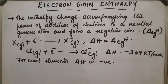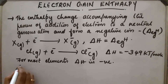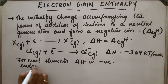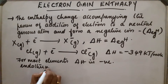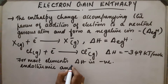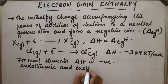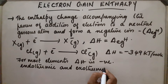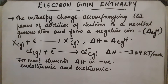Depending upon the element, the process of adding an electron is either endothermic or exothermic. Endothermic means energy is needed for this reaction and exothermic means energy is released. Most of the cases the reaction is an exothermic reaction, so delta H will be a negative value.